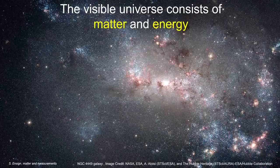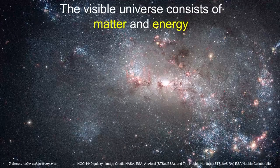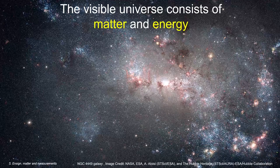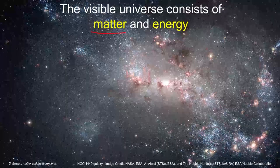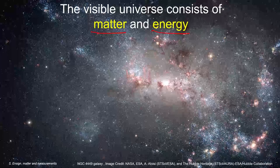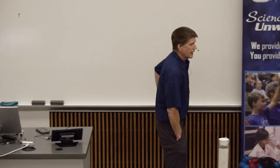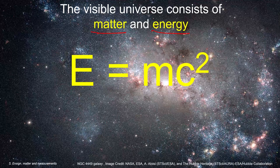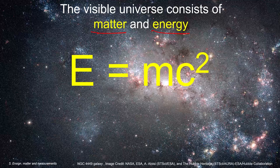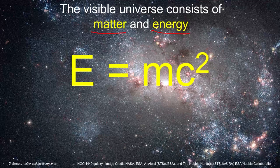So to understand radioactivity, we have to understand what the universe is made of. So the visible universe that we can see around us consists of two things. It consists of matter and energy. And it turns out that these two things are actually interconvertible. In the early 1900s, Einstein deduced that matter could be converted to energy, and energy could be converted to matter according to his very famous equation, E equals MC squared.